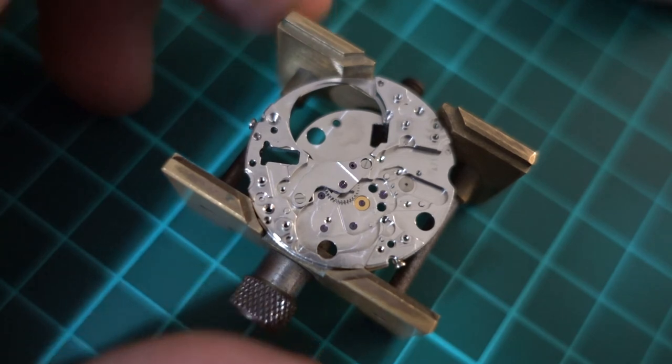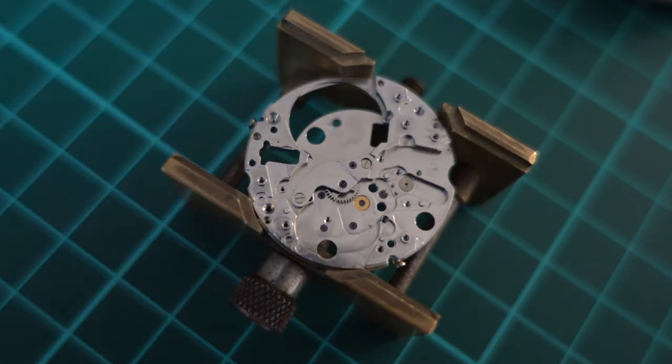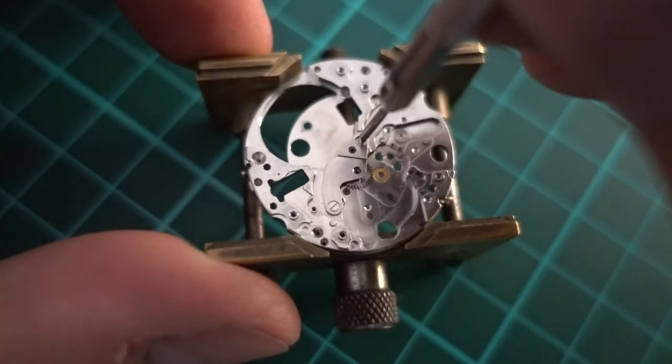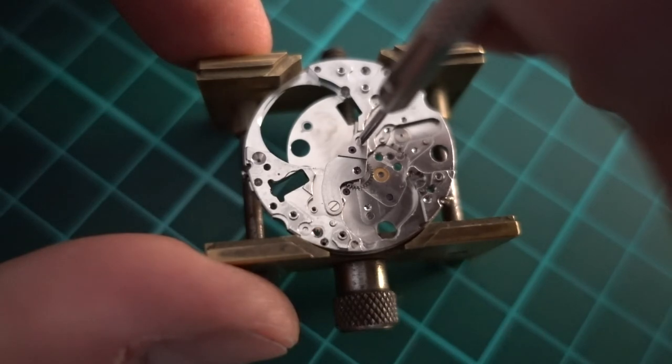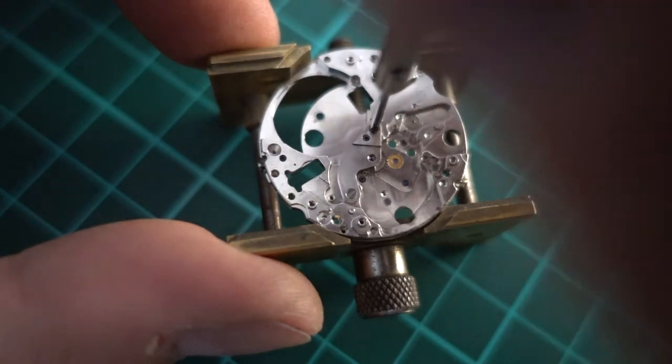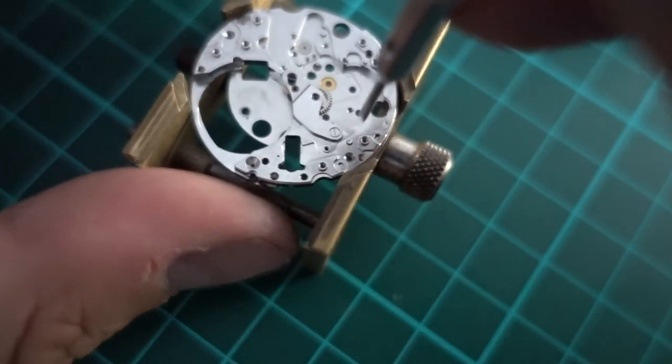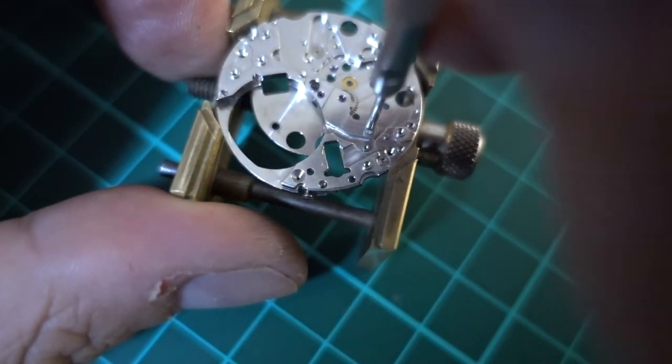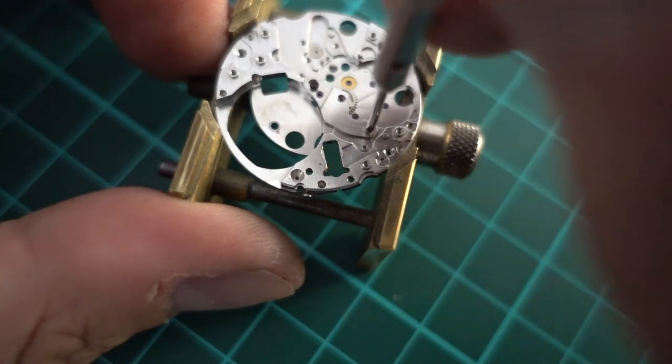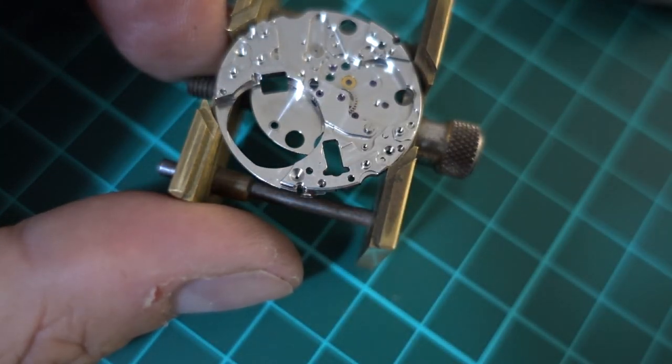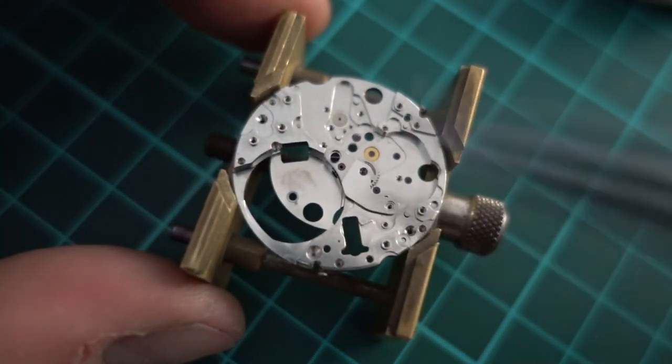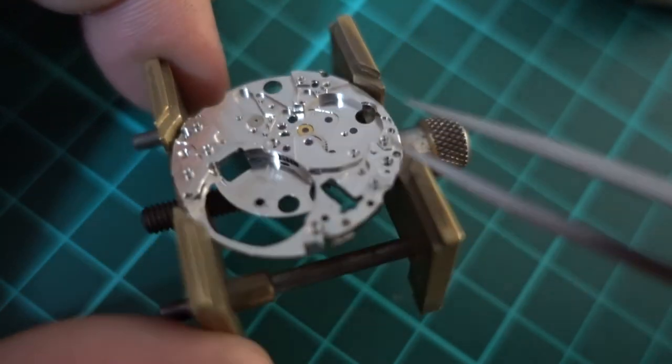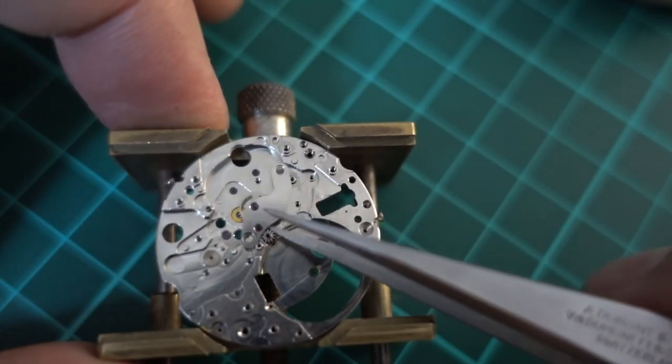Okay, so now I'm just going to remove the centre bridge which has, you'll see there, there's a little intermediate wheel which is driven by an oddball centre wheel, which is driven by the barrel. Again, this was a bit fiddly, but eventually I got it. And up that comes.